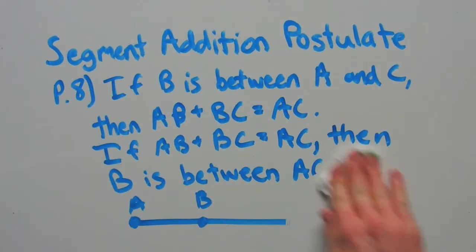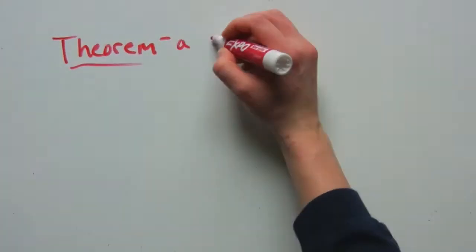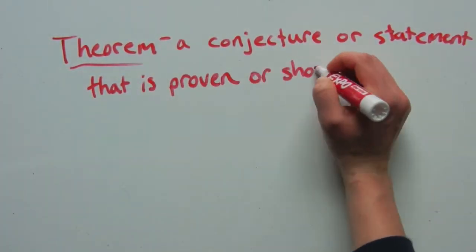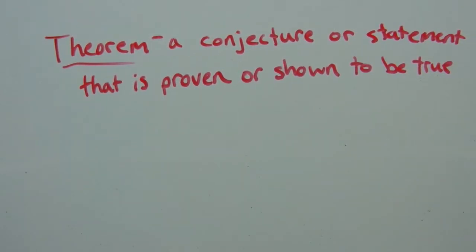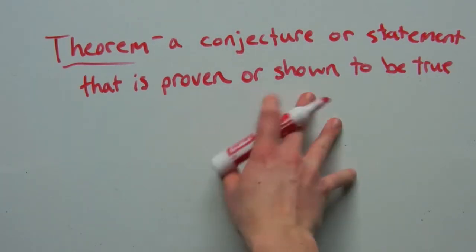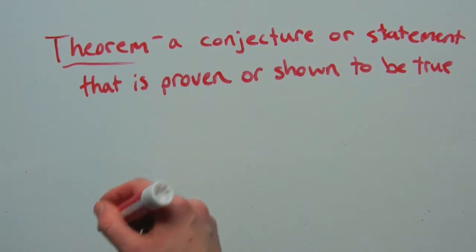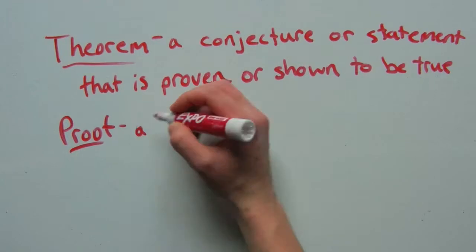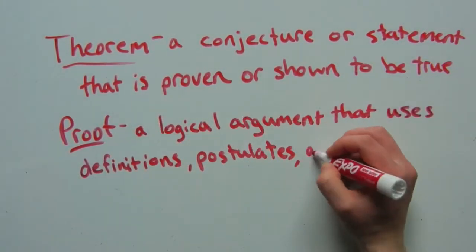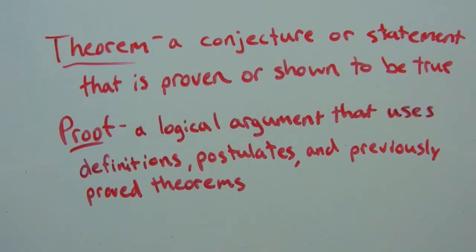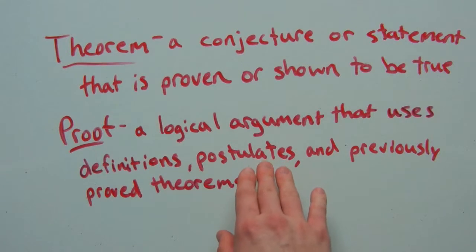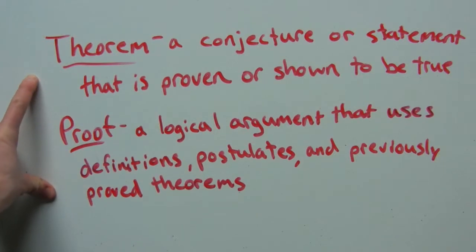A theorem is a conjecture or statement that is proven or shown to be true. Proof is a logical argument that uses definitions, postulates, and previously proved theorems.